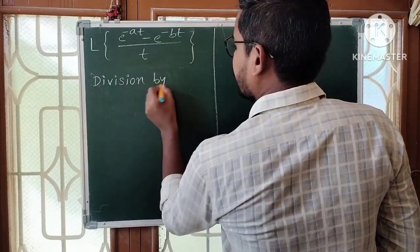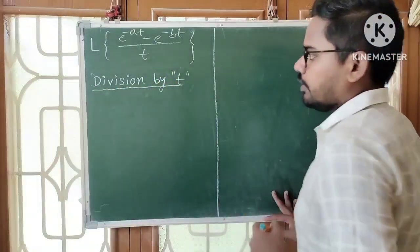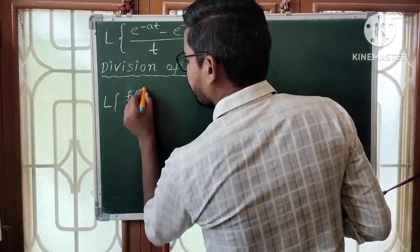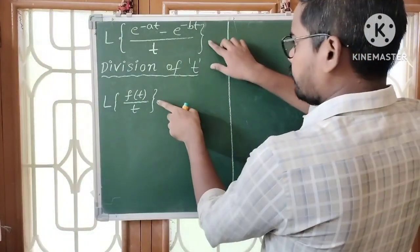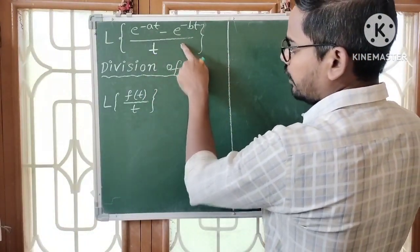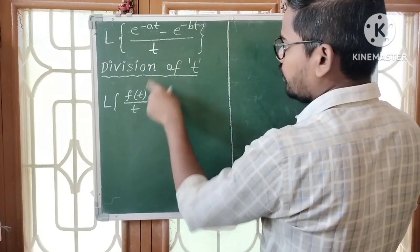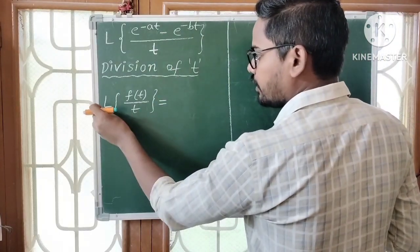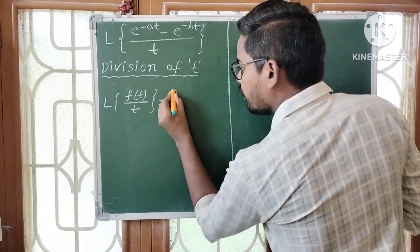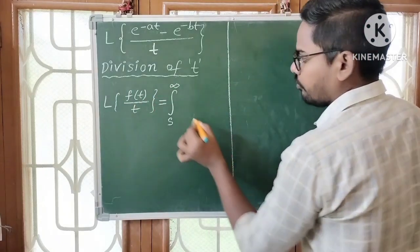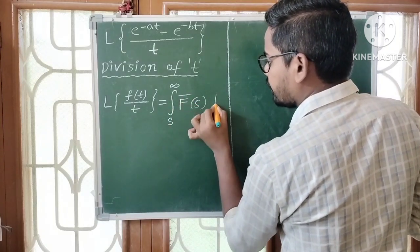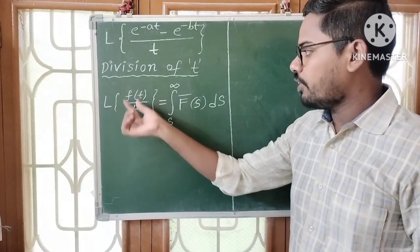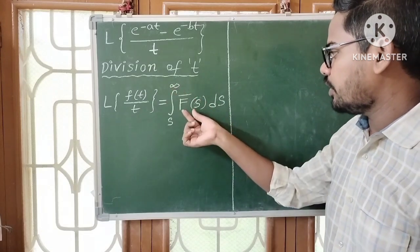According to the division by t theorem, the Laplace transform of f(t)/t equals the integral from s to infinity of f̄(s) ds. Here f̄(s) is also written as L{f(t)}, so L{f(t)} = f̄(s). This is the formula for finding the Laplace transform of this type of function.